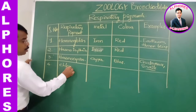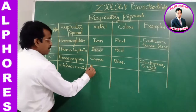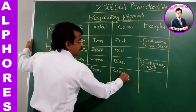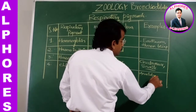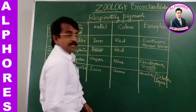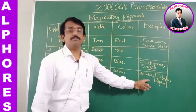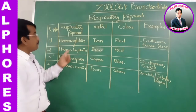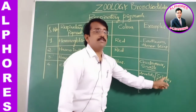Chlorocruorin is a respiratory pigment that also contains iron as its metal and is green colored. It is seen in certain annelids — examples are Sabella and Serpula, which are annelids in which chlorocruorin serves as the respiratory pigment.